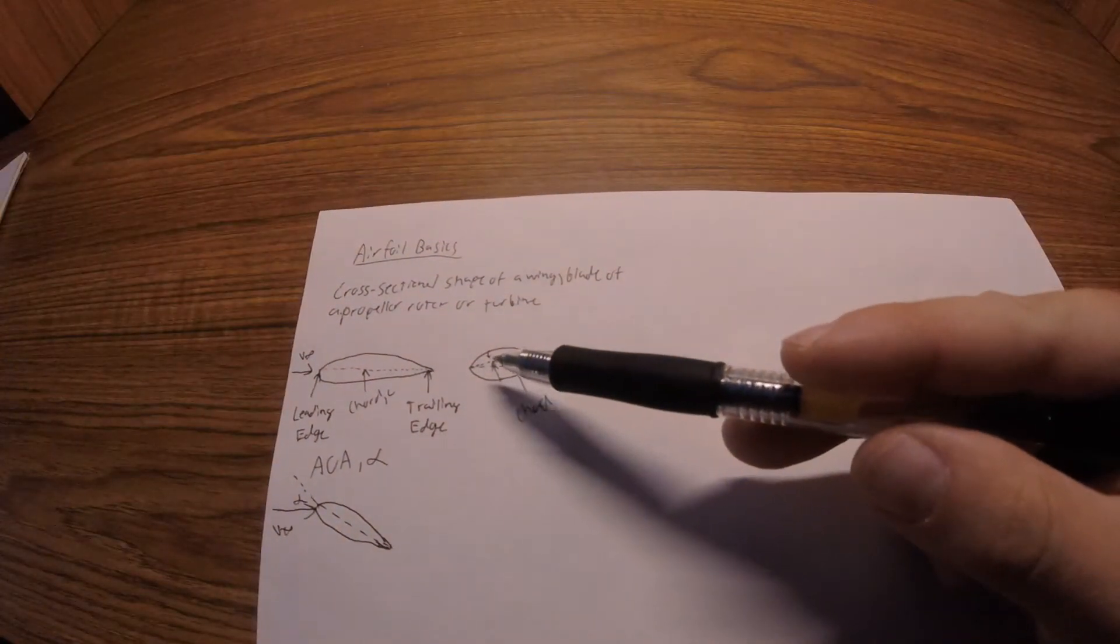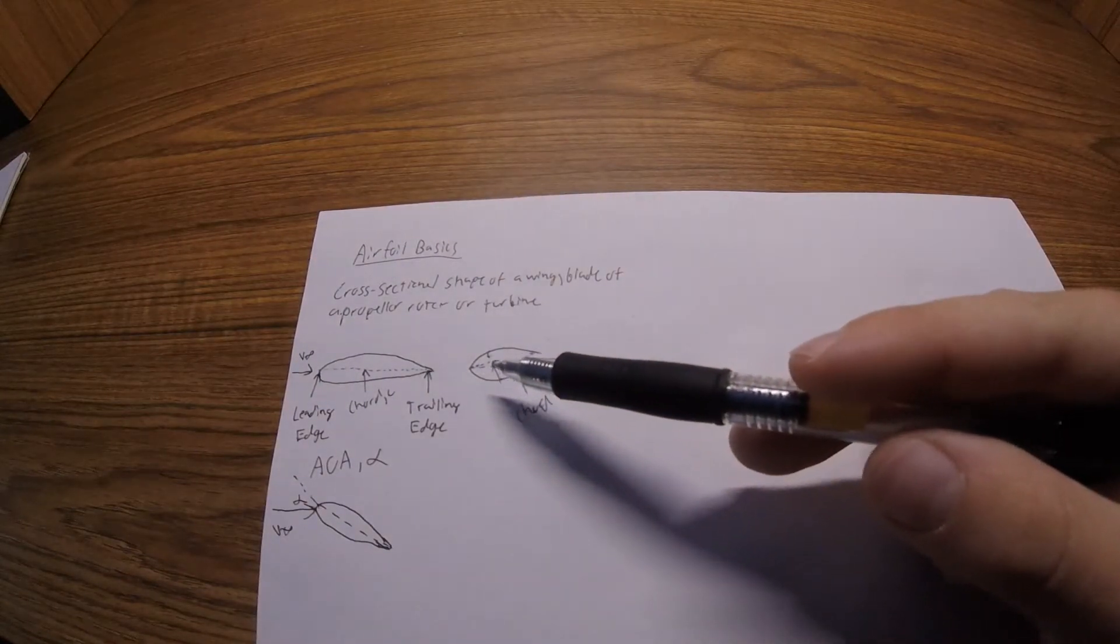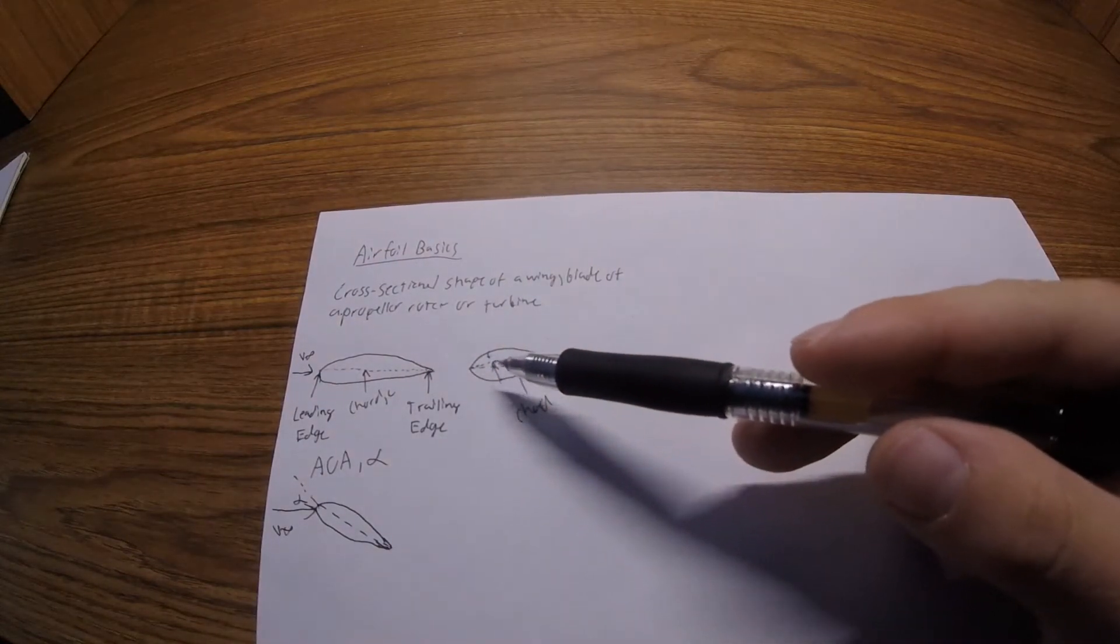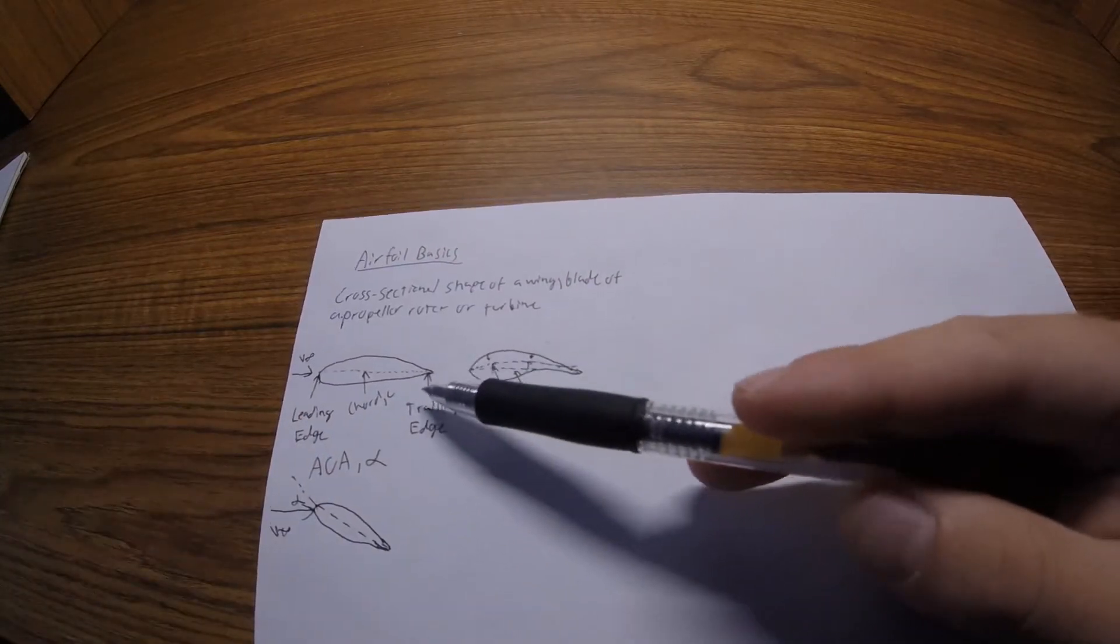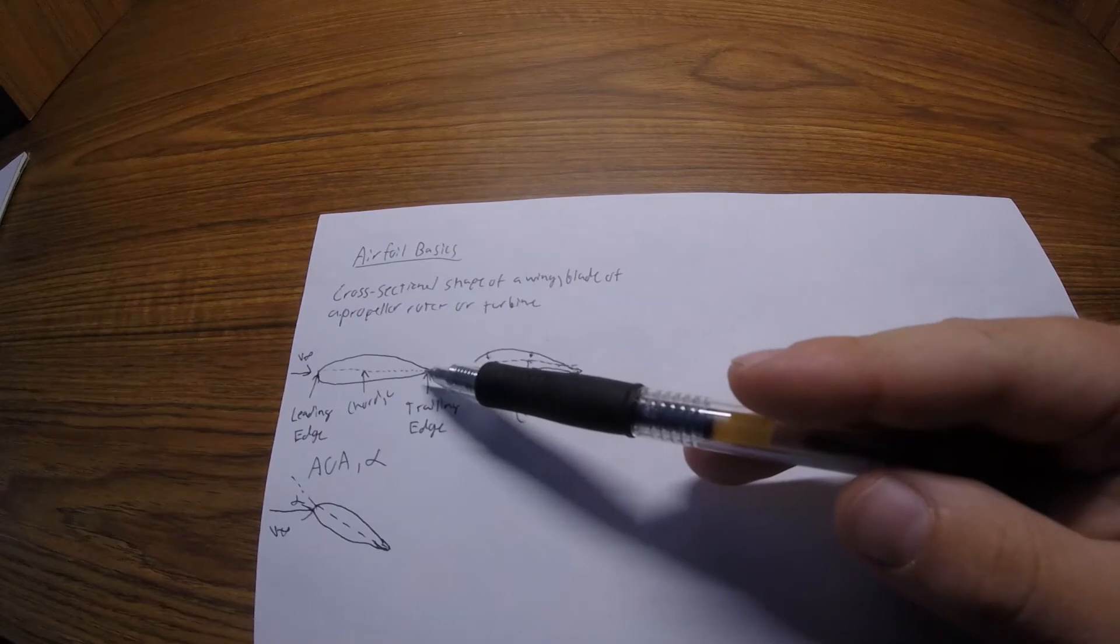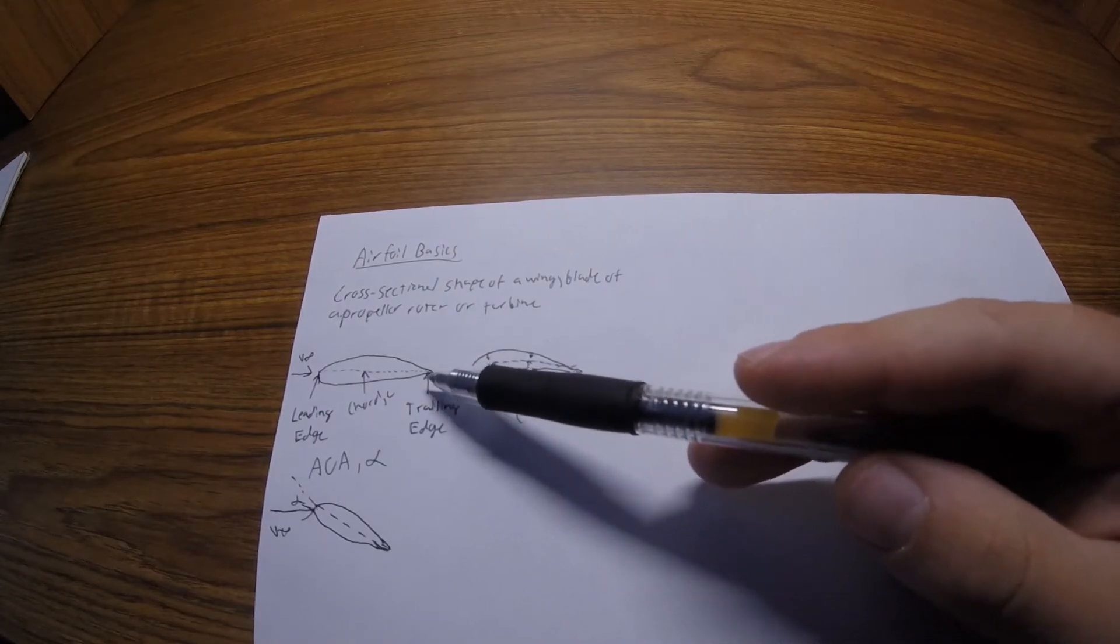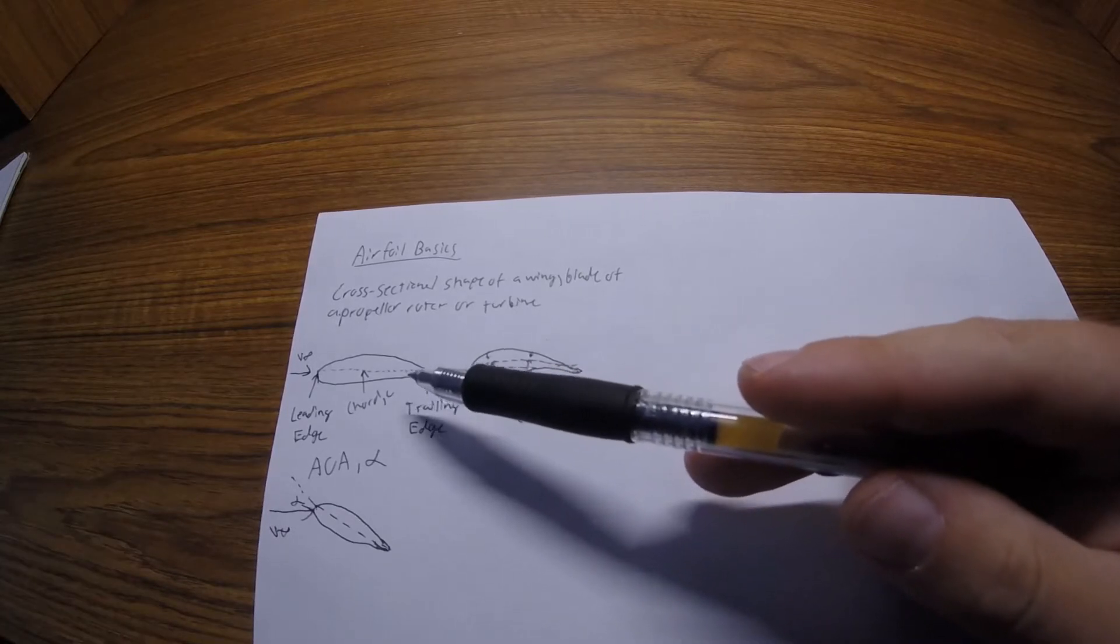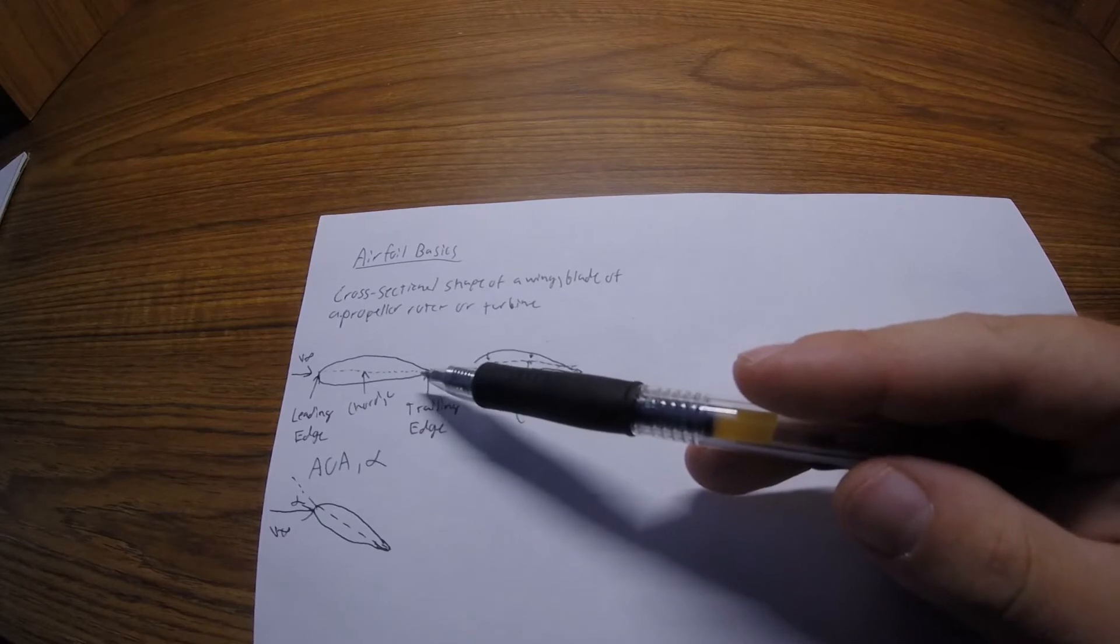This curvature is what gives most airfoils lift at a zero angle of attack. If it's a symmetrical airfoil at zero angle of attack, it's not creating any lift because the pressure differences between the top and bottom are exactly the same. Now if you had a symmetric airfoil with an angle of attack, it will then create lift.